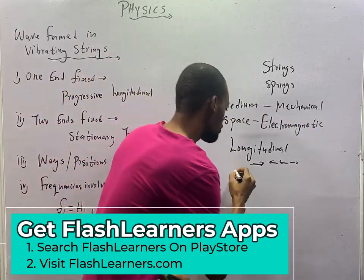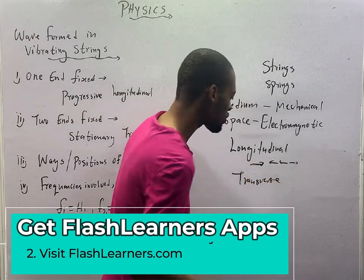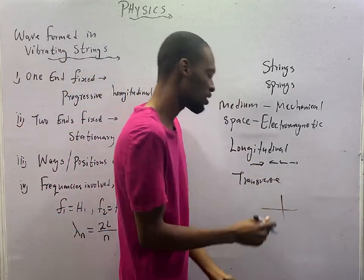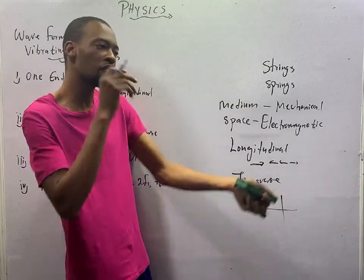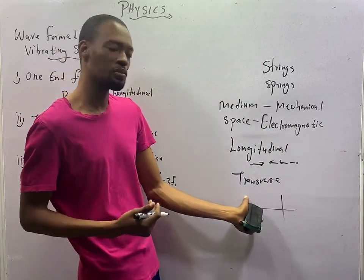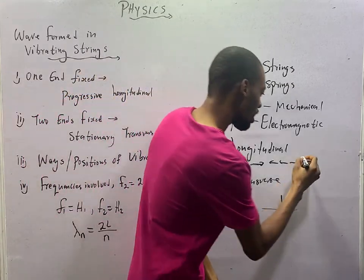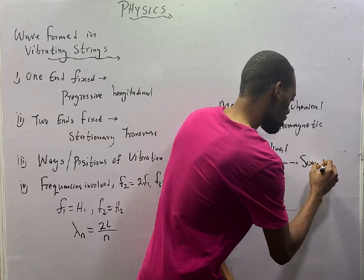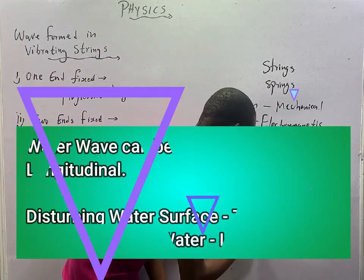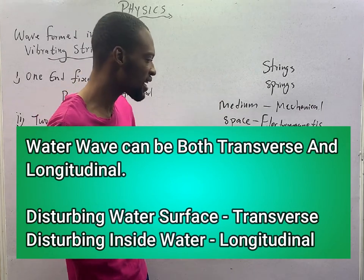For transverse waves, the direction of travel is not parallel. It is perpendicular to the direction of propagation. If it is propagated like this, it travels like this. That is being transverse. An example of longitudinal wave is sound. An example of transverse wave is water wave. They are transverse waves.